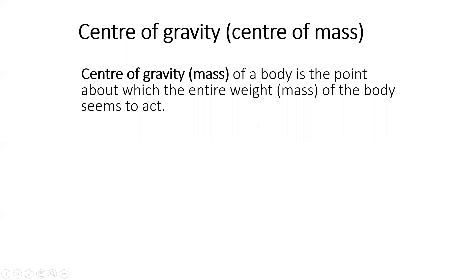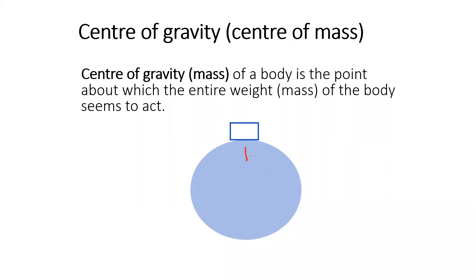Basically, the Earth is pulling the object towards its center. This is representing the Earth, and there's an object here. So Earth is pulling the object towards its center, and that force is known as the force of gravity. The force acting on 1 kilogram is known as the strength of gravity, which is 10 Newtons per kilogram for Earth. But the total force this object experiences also depends on the mass.